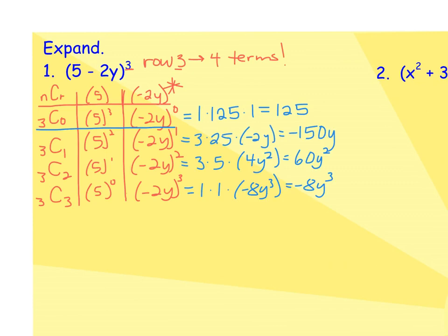These are my results from doing those steps. 3c1 is 3, 5 squared is 25, negative 2y to the first power is negative 2y. When I multiply all of my coefficients together, I got negative 150y. In the next row, 3 times 5 times 4y squared. Remember, negative 2 squared is positive 4. I got positive 60y squared. And in that last row, I got 1 times 1 times negative 2 to the third power, which is negative 8, and then y to the third power, leaving my coefficient to be negative 8.